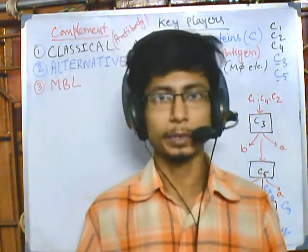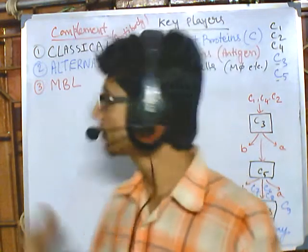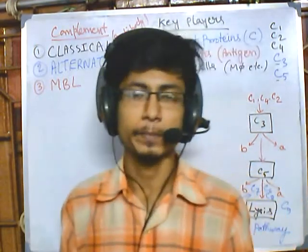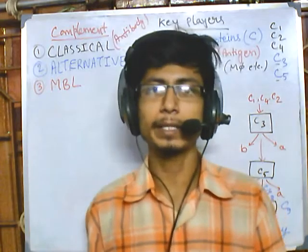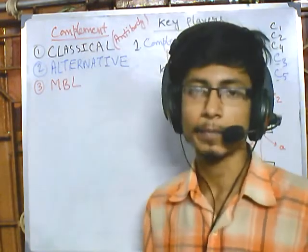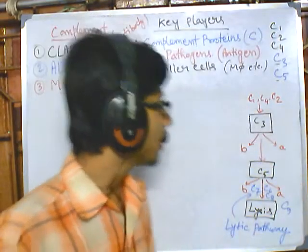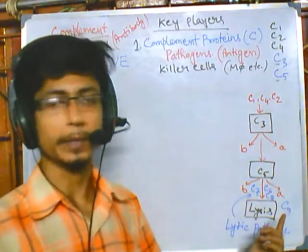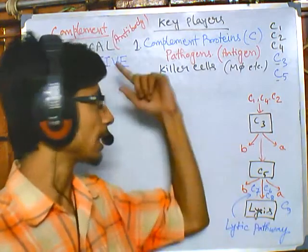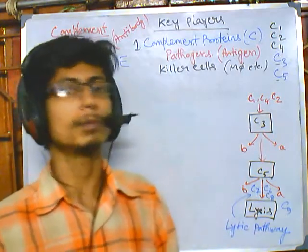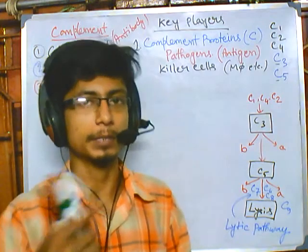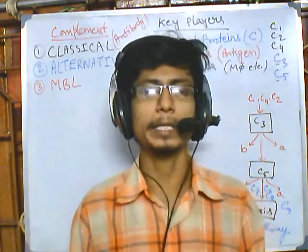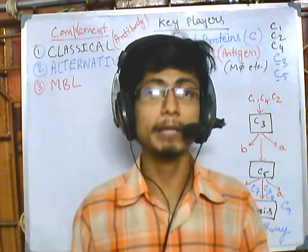Welcome back friends. In this video we will be talking about the MBL pathway of complement activation. This MBL pathway resembles most of the classical pathway, which has three barriers: C3 convertase, C5 convertase, and finally the lytic pathway. The lytic pathway is common to all three types of complement pathways we are studying. The full form of MBL pathway is mannose binding lectin pathway or mannan binding lectin pathway.